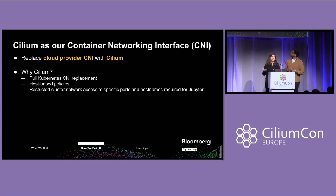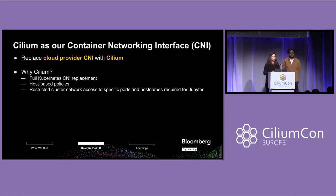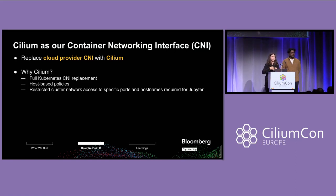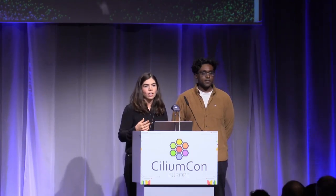We use Cilium as our container networking interface. BQuant runs in the public cloud, and so we're able to replace the cloud provider CNI with Cilium. That's one of the reasons why we chose Cilium — it is a full CNI replacement. We want to control the access out of BQuant workloads because it's running in the public cloud. We don't want access to the full internet from those workloads, so we wanted host-based policies to control what our clients are able to access from these BQuant workloads.